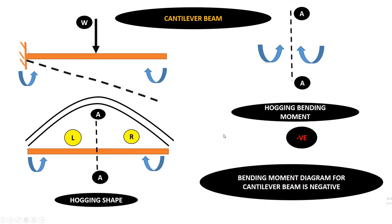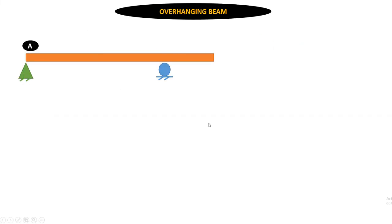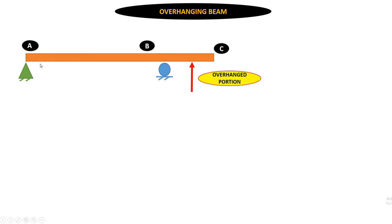So the bending moment diagram for a cantilever beam is negative, provided the loading condition is downwards. Next, let us take an overhanging beam, where AB is the simply supported part and BC is the overhanging portion.